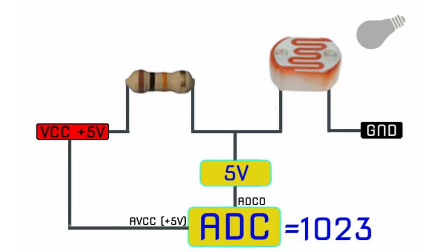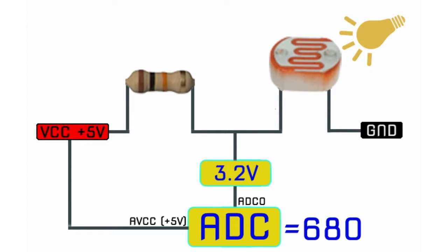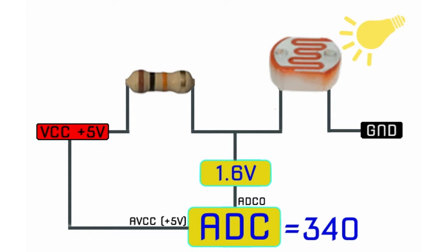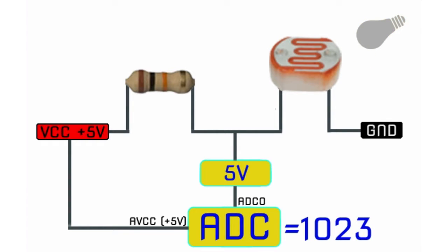For converting this change in resistance to a change in voltage, we are going to use a voltage divider circuit. In this resistive network we have one constant resistance and one variable resistance. R1 is a constant resistance and R2 is the force sensor which acts as a resistance. The midpoint of the branch is taken for measurement. When resistance R2 changes, the Vout changes with it linearly.